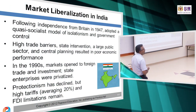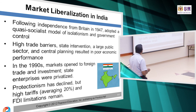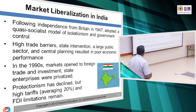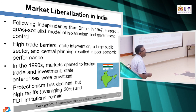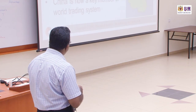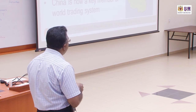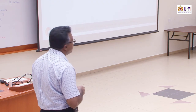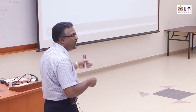India also liberalized its economy. In the 1990s, India opened to foreign trade investment, enterprises were privatized, and protectionism declined — though high tariffs still average 20% and FDI limitations still exist. But they have really broken the closeness of the economy. China in the 80s, then India in the 1990s, then Malaysia and so on — it continues to grow.